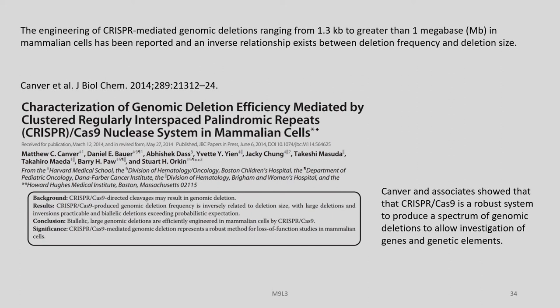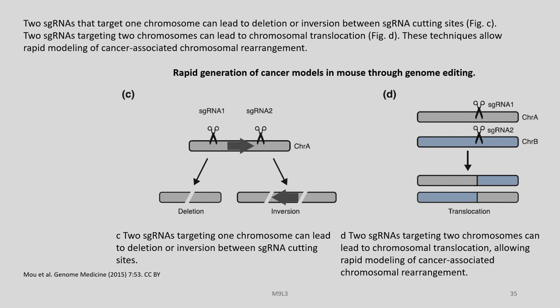The engineering of CRISPR-mediated genomic deletions ranging from 1.3 kb to greater than 1 megabase in mammalian cells has been reported, and an inverse relationship exists between deletion frequency and deletion size. Work by Canver et al. in the Journal of Biological Chemistry characterized genomic deletion efficiency mediated by CRISPR-Cas9 in mammalian cells, showing it is a robust system to produce a spectrum of genomic deletions. Two sgRNAs targeting one chromosome can lead to deletion or inversion between sgRNA cutting sites (Figure C), while two sgRNAs targeting two different chromosomes can lead to chromosomal translocation (Figure D).